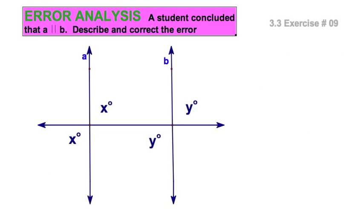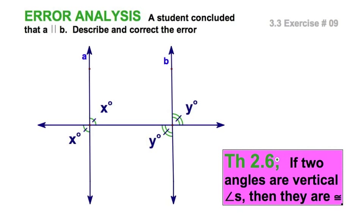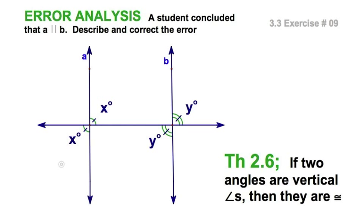Oh I love these error analysis problems. You're given this picture and saying well the student's trying to say that A is parallel to B and well why is this wrong? Well the only thing we've got here is this. In each case we've got our theorem 2-6 telling us that we've got vertical angles congruent. Well we knew that without having the x in the x. I mean x degrees is equal to x degrees, y degrees is equal to y degrees. Unless we're told that x is equal to y we've got nothing here.